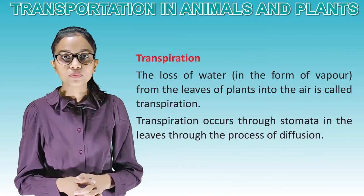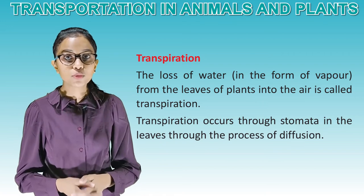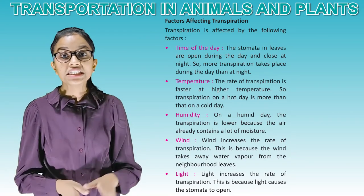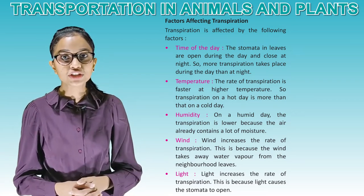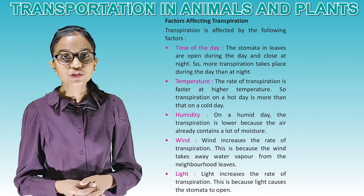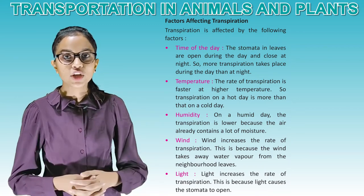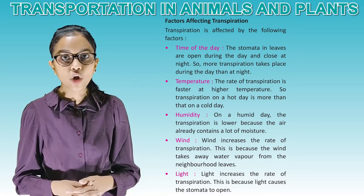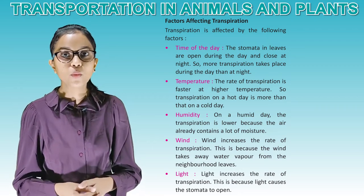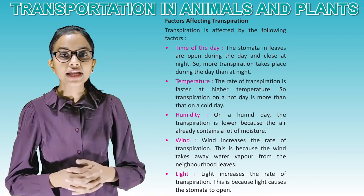Transpiration: the loss of water in the form of vapour from the leaves of the plant into the air is called transpiration. It occurs through stomata in the leaves through the process of diffusion. Factors affecting transpiration: time of day — stomata are open during the day and close at night, so more transpiration takes place during the day. Temperature — transpiration is faster at higher temperature. Humidity — on a humid day, transpiration is lower because the air already contains a lot of moisture. Wind increases the rate of transpiration because it takes away water vapour from the neighbourhood of leaves. Light increases the rate of transpiration because it causes the stomata to open.